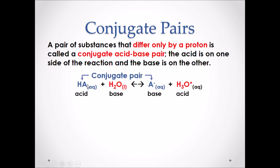Our first conjugate pair is HA and A-. HA is our acid; on the other side of the chemical equation is our base, A-. They differ only by a hydrogen. Our other conjugate pair in this reaction is H2O, which is our base, and on the other side of the equation is our acid, H3O+. Again, they differ only by a hydrogen.